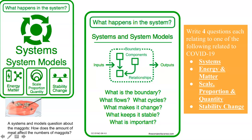Another cross-cutting concept within systems and models is scale, proportion, and quantity. In considering phenomena, it is critical to recognize what is relevant at different measures of size, time, and energy, and to recognize how changes in scale, proportion, or quantity affect a system's structure and performance. Within systems and system models, another cross-cutting concept is stability and change. For natural and built systems alike, conditions of stability and determinants of rates of change or evolution of a system are critical elements of study. What keeps it stable? What is important to the system? Pause the movie and write four questions about COVID-19: one about systems, one about energy and matter, one about scale and proportion, and one about stability and change.